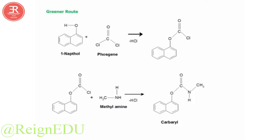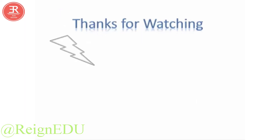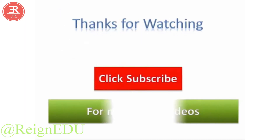As we can see, the greener route synthesis uses exactly the same reagents but in a different sequence. Hence, this synthesis avoids the preparation of methyl isocyanate, which was responsible for the Bhopal gas tragedy. However, the use of phosgene and methylamine still needs to be avoided.